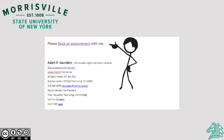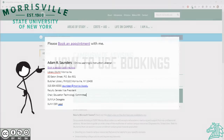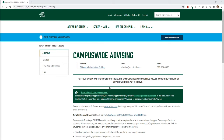The link for the Bookings page can be found in a number of different ways. It can be found through a faculty member's email or in their email signature. It can also be found online through the Morrisville website.